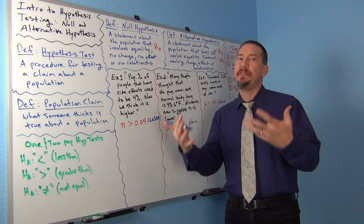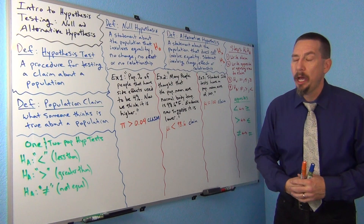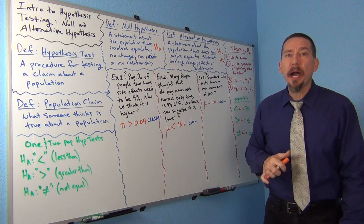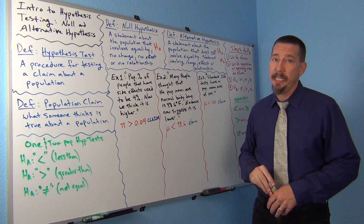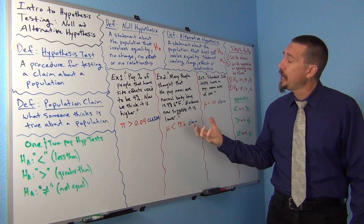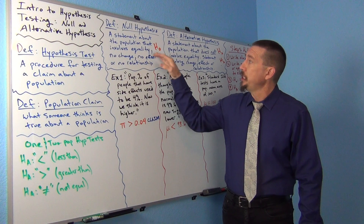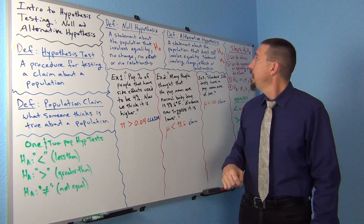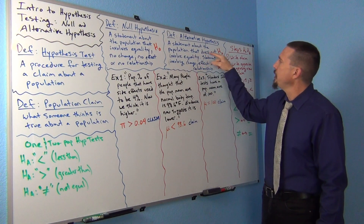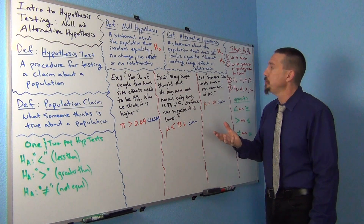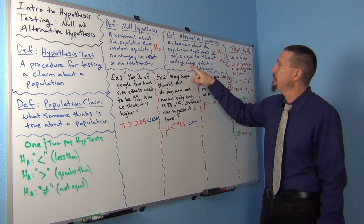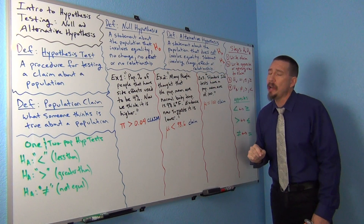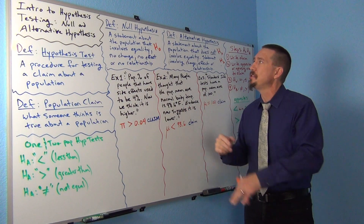From this claim we can now develop the null and alternative hypothesis. Always identify your claim first before trying to figure out the null and alternative hypothesis. A null hypothesis is a statement about the population that involves equality — it can also be a statement about no change, no effect, or no relationship. The alternative hypothesis is a statement about the population that does not involve equality — it can involve significant change, significant effect, or that there is a relationship. We have symbols so we don't have to write these out every time.